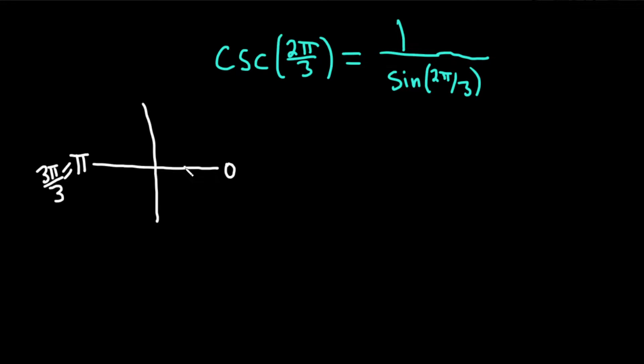Just pretend there's a circle here. So here we go. It's going to be here because this is 2π over 3.